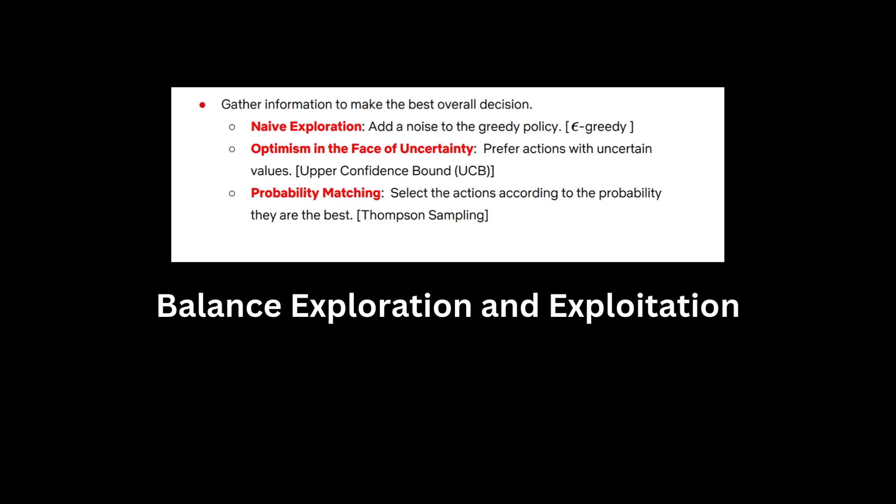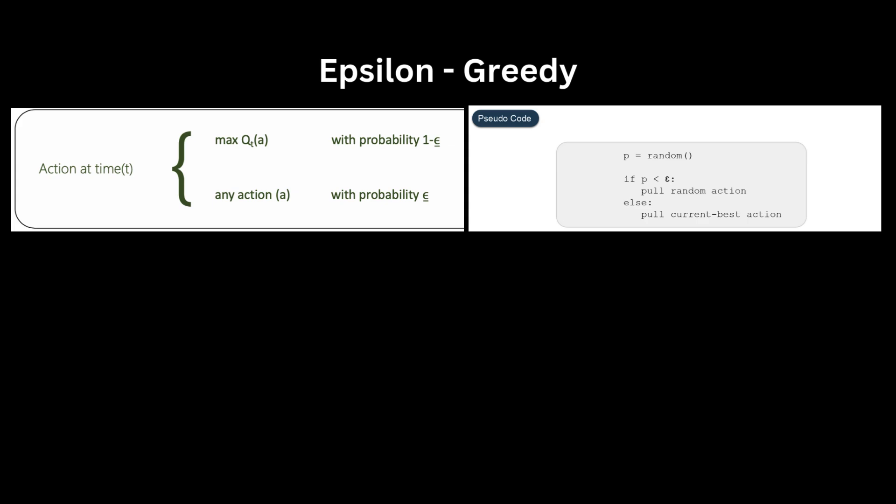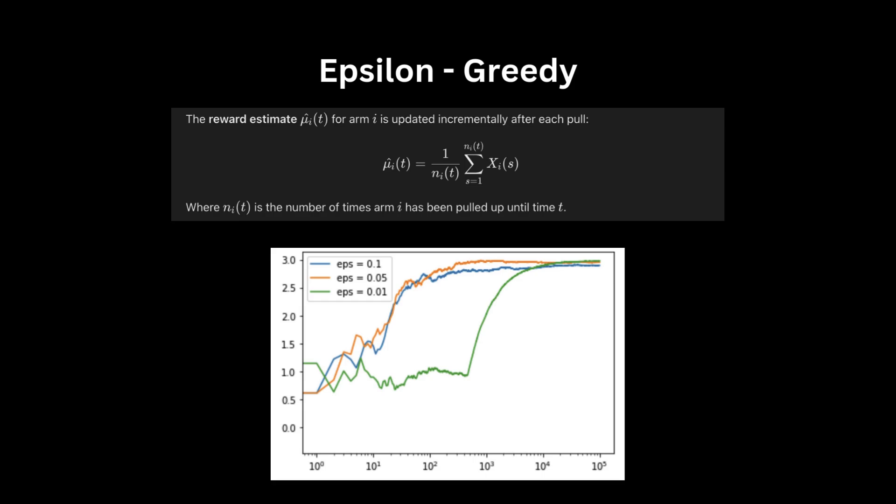Now, let's get into the algorithms that balance exploration and exploitation. In epsilon-greedy, with probability 1 minus epsilon, they exploit by selecting the arm with the highest estimated mean reward. With probability epsilon, they explore by selecting an arm randomly.